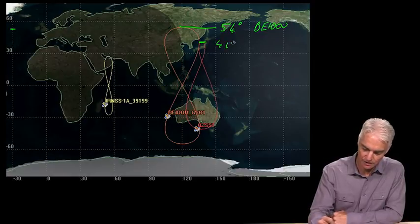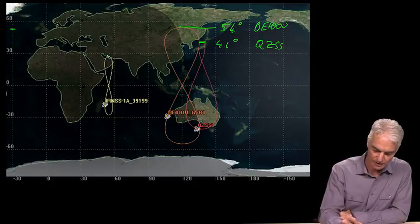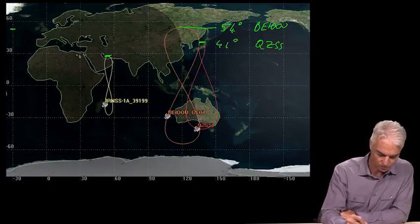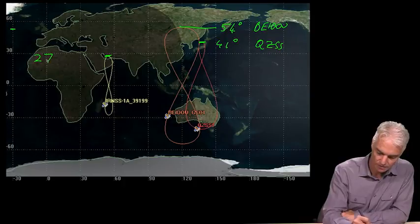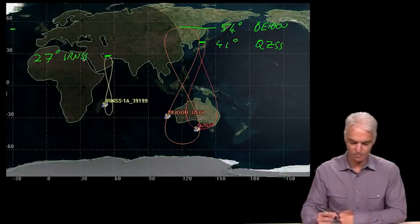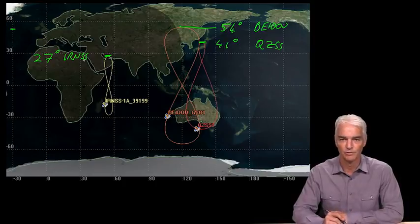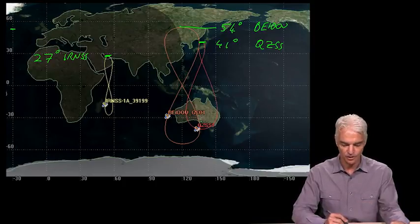And 41 degrees for QCSS. And 27 degrees for IRNSS. And the reason is obvious. When you look at it, you get best coverage over the region of interest for each of these systems.